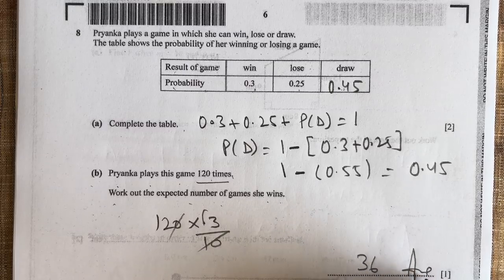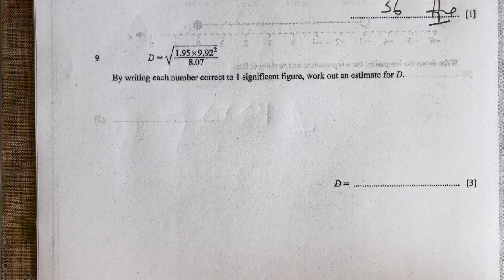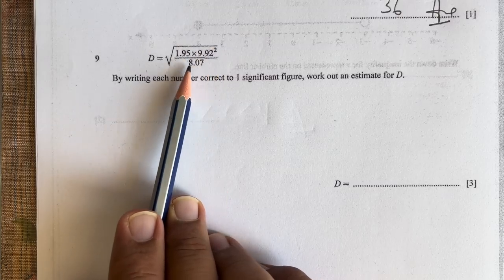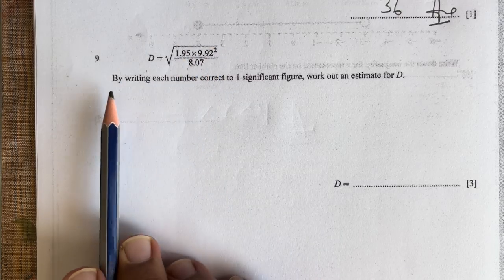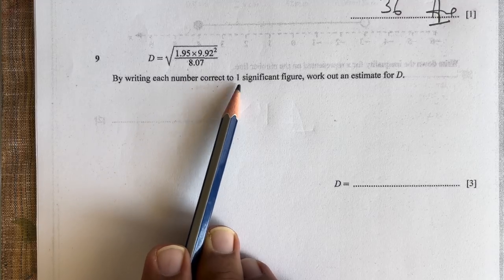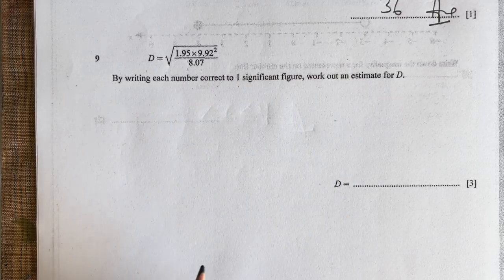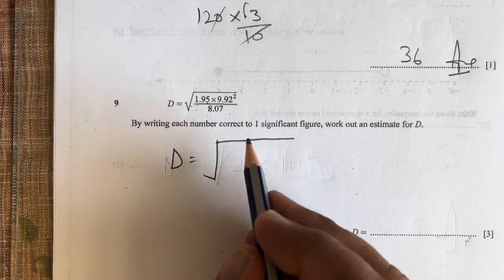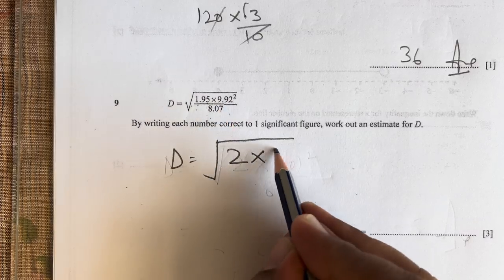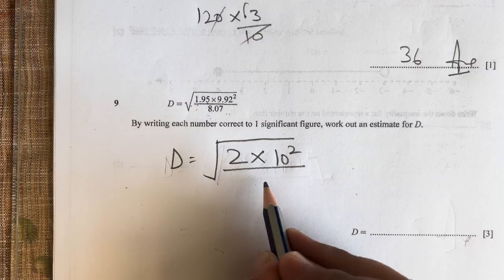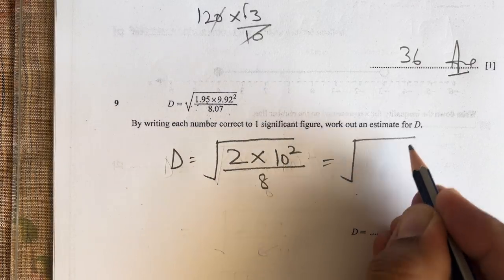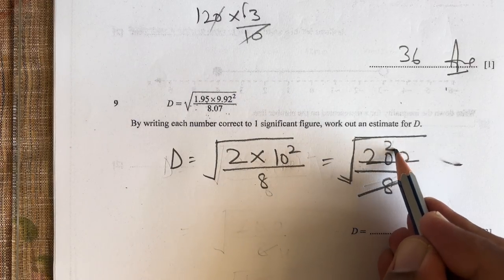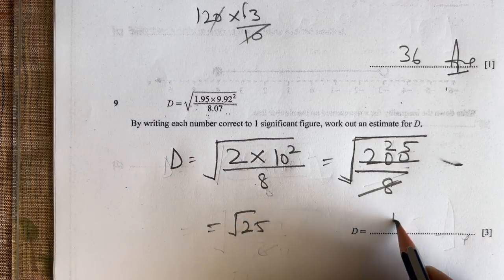Question number 9: D = √(1.95 × 9.92²/8.07). By writing each number correct to 1 significant figure, work out an estimate for D. D = √(2 × 10²/8) = √(200/8) = √25 = 5. So the answer is 5.